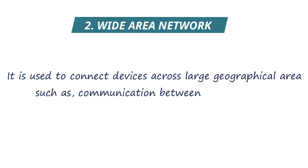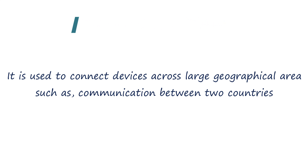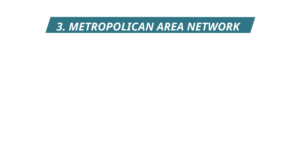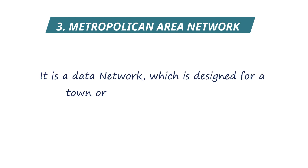The second type is Wide Area Network, simply called WAN. It is used to connect devices across a large geographical area, such as communication between two countries. For example, when we are communicating from India to a person in the United States, that is WAN.